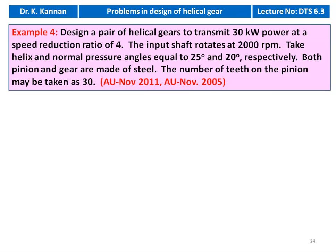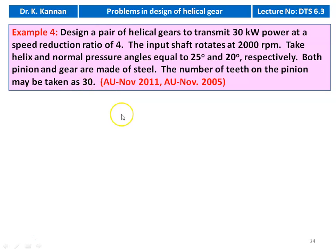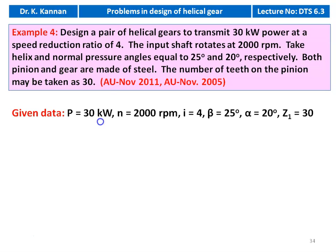Example number 4. This question appeared in November 2011 and April/November 2005. Design a pair of helical gears to transmit 30 kW at a speed reduction of 4. The input shaft rotates at 2000 RPM. Helix angle is 25° and normal pressure angle is 20°. Both pinion and gear are made of steel. Number of teeth on pinion Z1 = 30 (given).